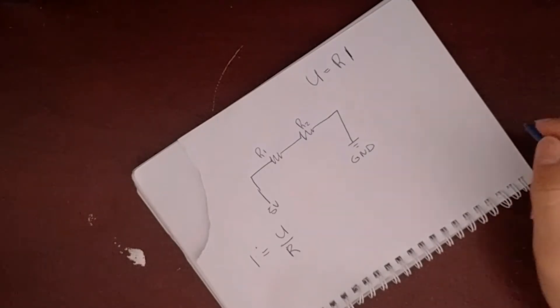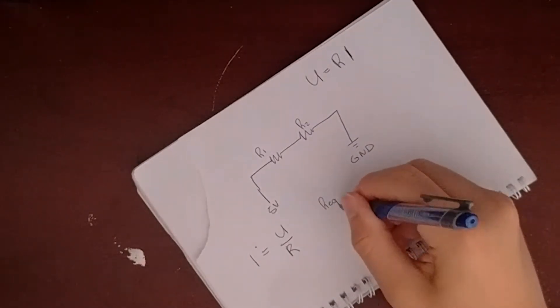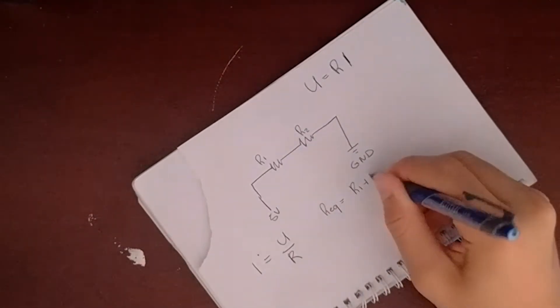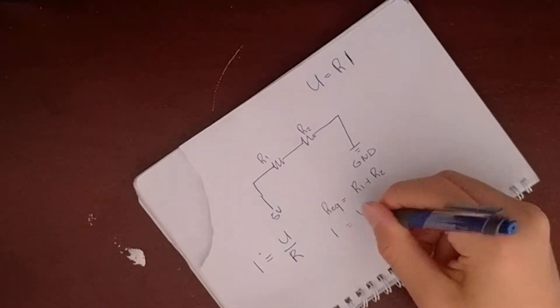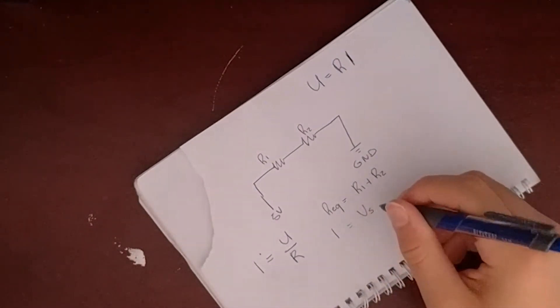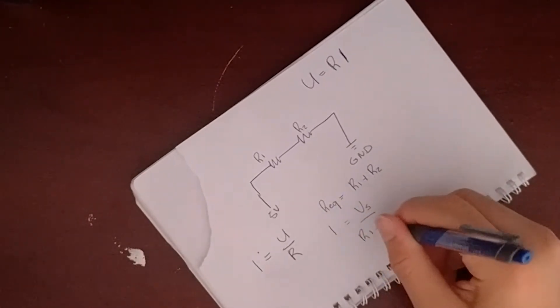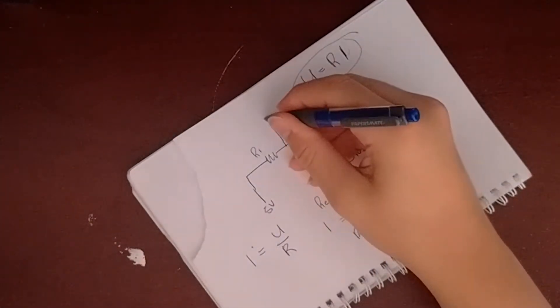We also know that the equivalent resistance of this circuit is R1 plus R2. Therefore, the current is equal to the voltage applied divided by R1 plus R2. V2 is the voltage going through R2, which is equal to the resistance times the current.